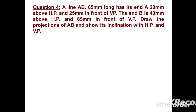Hello everyone, let's discuss question number four, chapter Projection of Line, subject Engineering Graphics. In the problem statement, a line AB 65 mm long has its end A 20 mm above HP and 25 mm in front of VP, and B is 40 mm above HP and 65 mm in front of VP. Draw the projections of AB and show its inclinations with the horizontal plane and vertical plane.